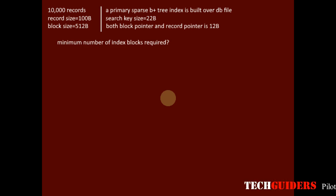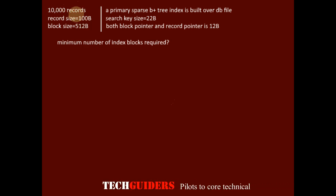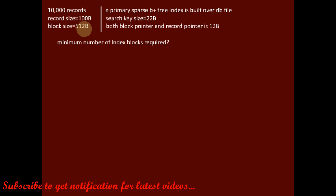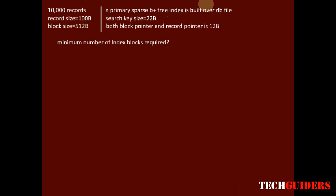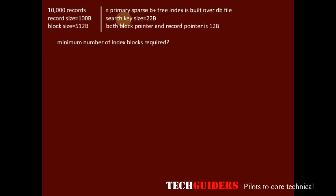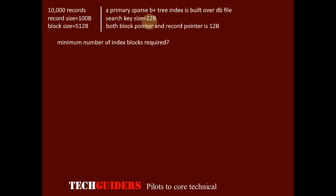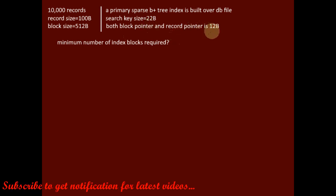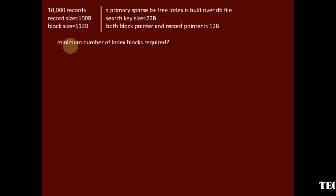Consider this problem. A database file consists of 10,000 records. The size of each record is 100 bytes and the block size is 512 bytes. A primary sparse B+3 index is built over the database file whose search key size is 22 bytes and the size of both block pointer and record pointer is the same — 12 bytes. What is the minimum number of index blocks required?